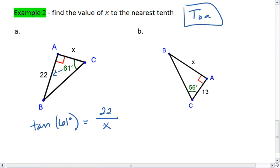What you're going to want to do is plug tan of 61 into your calculator. One thing you do want to make sure is that your mode is in degrees. The way you do this is your calculator should have a mode button. Go ahead and hit the mode button.